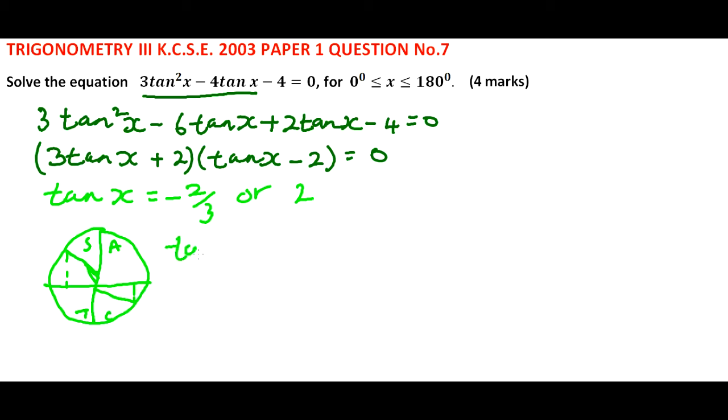When we have tan x = −2/3, we get that x = 180° − 33.69°.